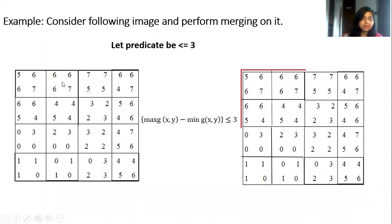So first we will consider these 4 regions. This, this, this and this region. In this maximum pixel intensity is 7. Minimum intensity is 4. So difference is 3. And this 3 is less than or equal to 3. So it satisfies the criteria. And since it satisfies the criteria, I will remove these boundaries. And I will merge these 4 regions like this.